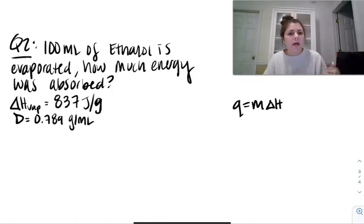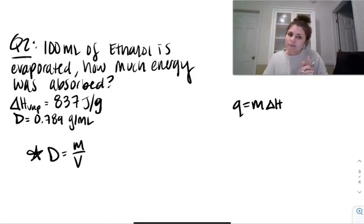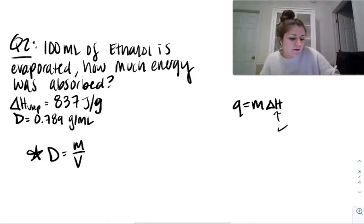Now, one thing that's going off in your head, hopefully, is that you notice we don't have a mass, but we are given density. So hopefully you remember D equals M over V. If you were like, kind of forgot it, you got to remember it. But here we are given the delta H. So we are good to go. Just here we need to solve for what M is.